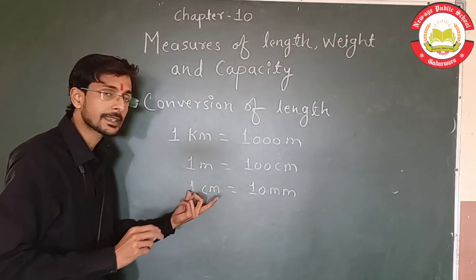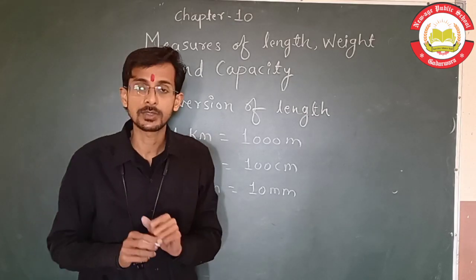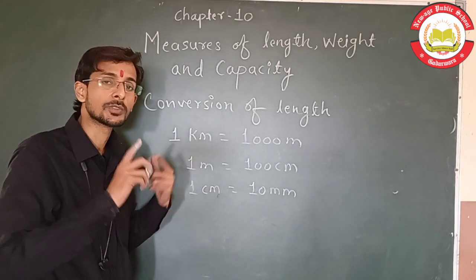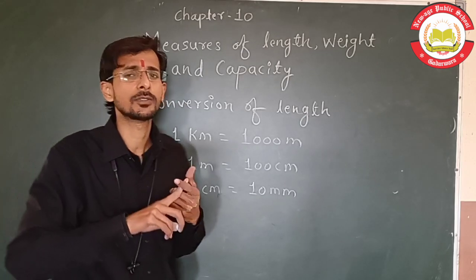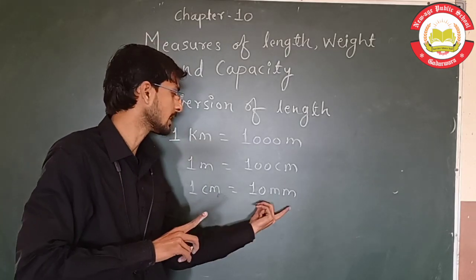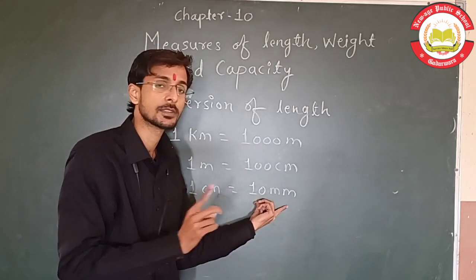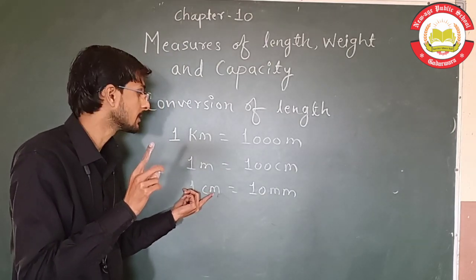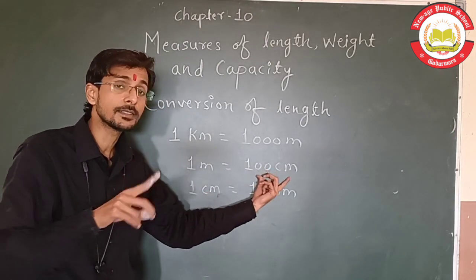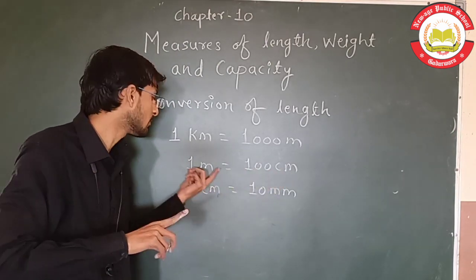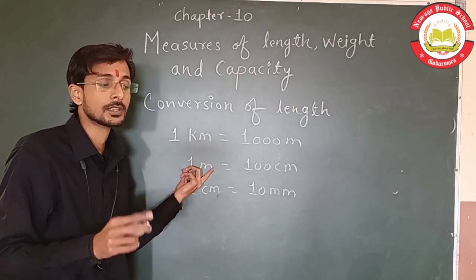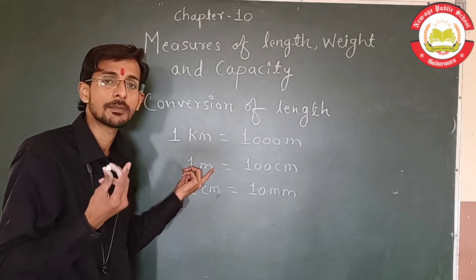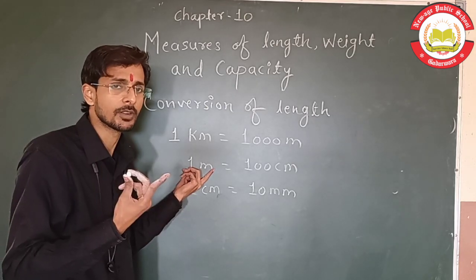Our ruler or scale is 15 cm. So 10 mm lines are equal to 1 cm, and 100 cm equals 1 meter. When we talk about length, we call meter the standard unit of length. So 2 meters would be 200 cm.